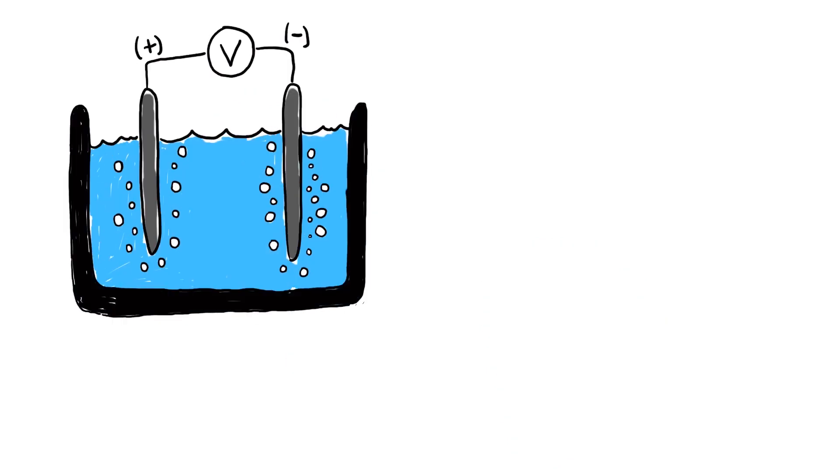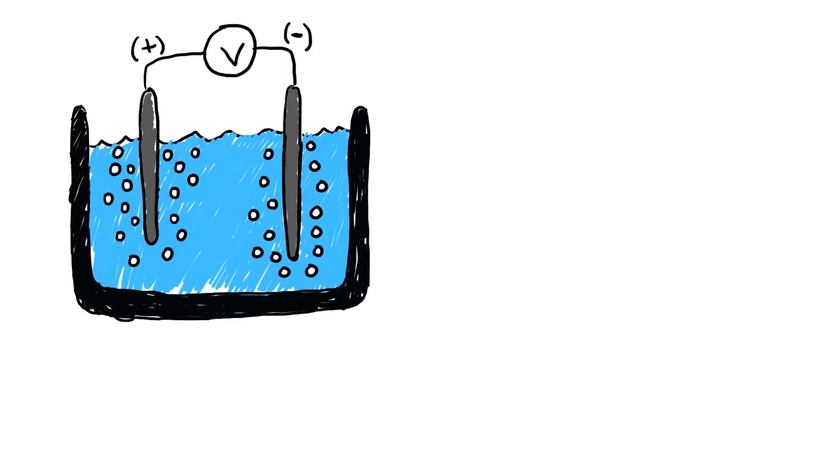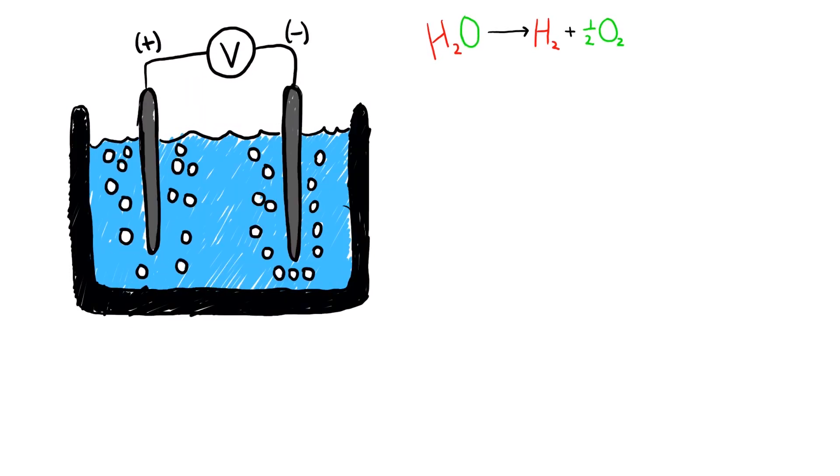Let's take the example of a water splitting device. This is a common electrochemical setup that utilizes electricity to generate hydrogen and oxygen from water. You may have done something like this as part of a laboratory experiment.